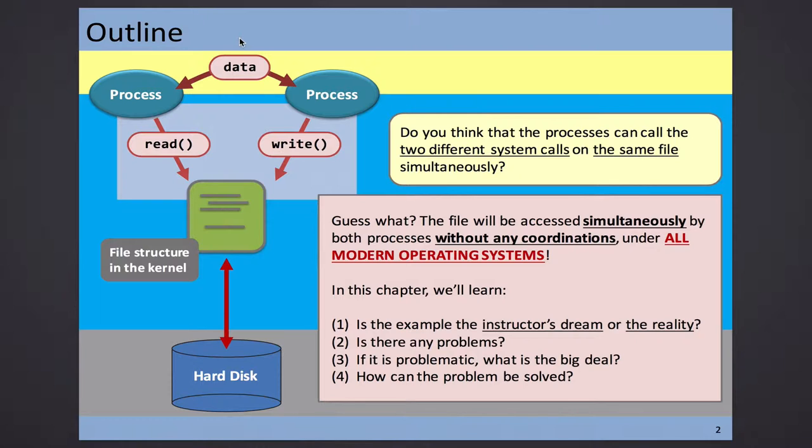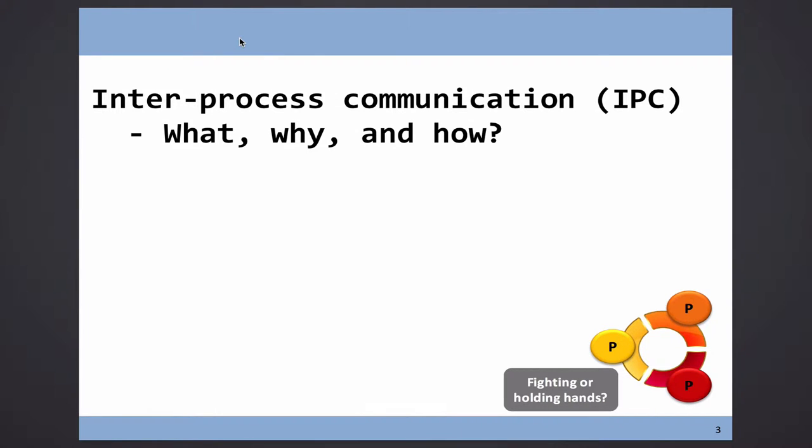Now we first will start to understand what are the resources that we can share and how. File is definitely one of the shared resources that we can share among processes. Because you don't just need to do Flock. You can allow different processes just open that file, and they just share the file. No problem. So this is a very easy way to understand it. And also we were going to understand, even though we have this mechanism to share resources, files, what is the problem? Maybe there's no problem. That's good. If there's no problem, these chapters can be chopped off.